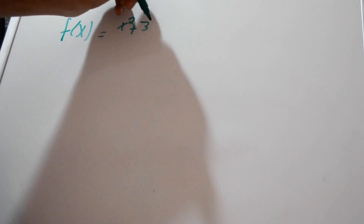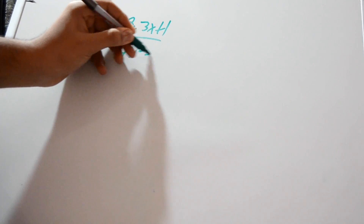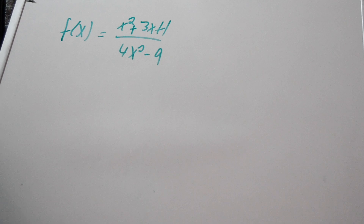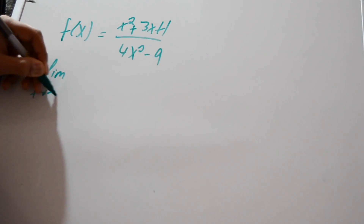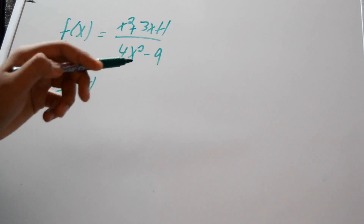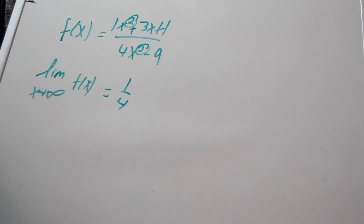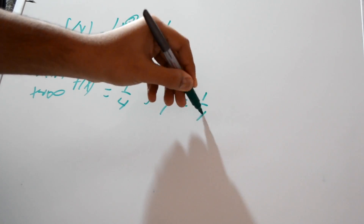Here's an example: determine all vertical and horizontal asymptotes of f(x) = (x² + 3x + 1) / (4x² − 9). For horizontal asymptotes, we find the limit as x approaches infinity. Looking at the exponents, both numerator and denominator are degree two — the same — so the limit is just the ratio of leading coefficients: one over four. Therefore there is a horizontal asymptote at y = 1/4.